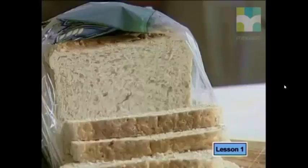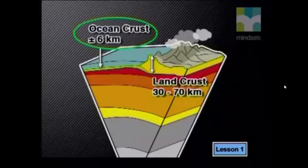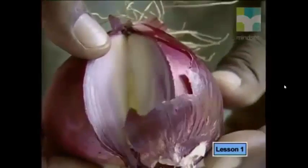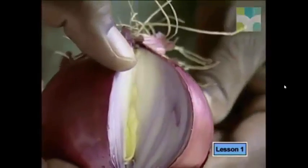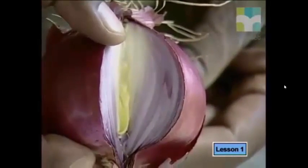Just like a crust of bread is quite thin, so is the Earth's crust. On the land, the crust thickness varies between 30 and 70 kilometers, but under the sea the crust is only about 6 kilometers thick. One of the ways we can think about the structure of the Earth is to compare it to an onion.